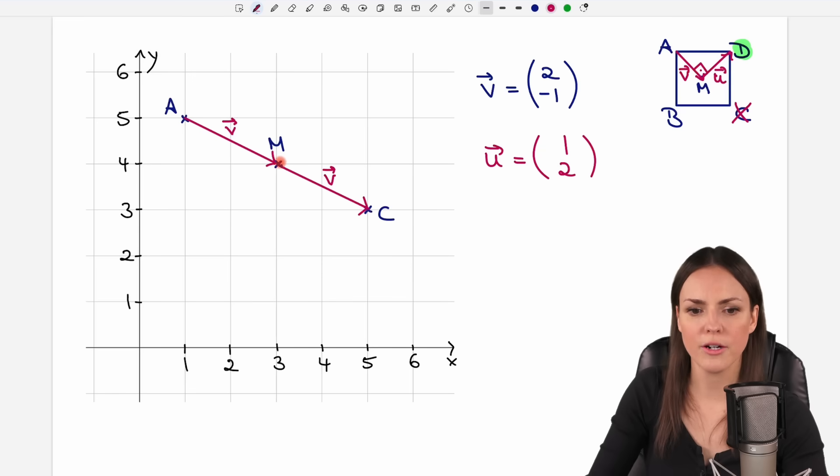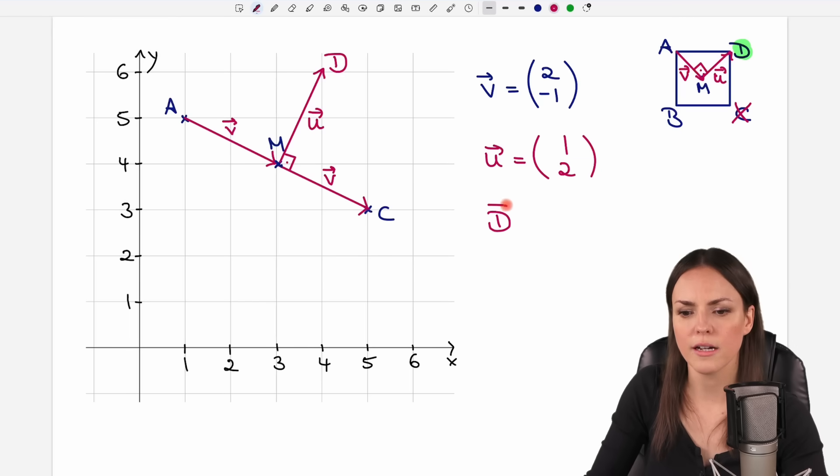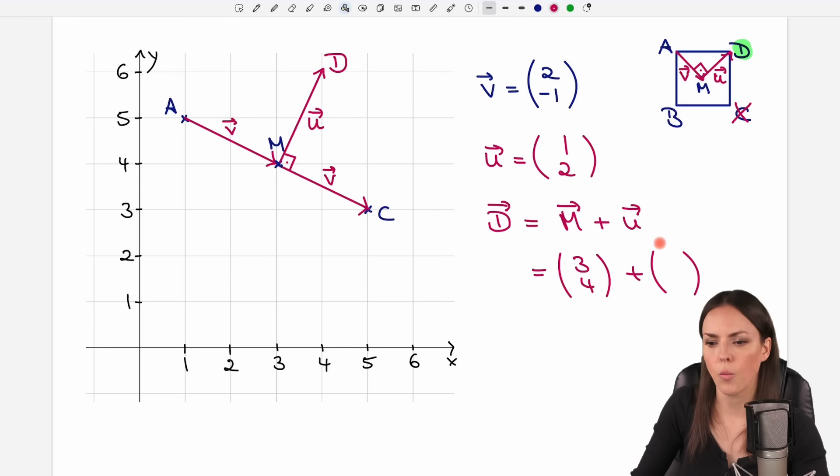What are the coordinates of our vector D? Well, we would start at the center, at M, and add u this time to end up in D. The coordinates from our center point were (3,4). The coordinates of u are (1,2). And if we add these now, 3 plus 1 equals 4, 4 plus 2 equals 6. (4,6) are the coordinates of D. Yes, looks good on our picture here as well.